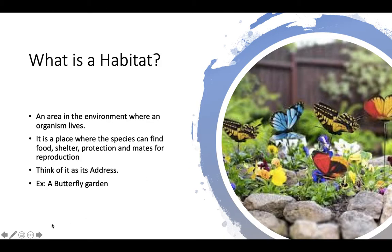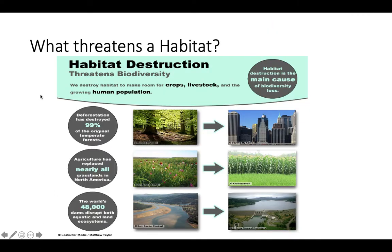Now let's think about what threatens a habitat. If you're thinking of a forest habitat, for example, it's not a surprise that we humans are the main cause of habitat destruction. Habitat destruction is the main cause of biodiversity loss. We destroy habitats to make room for crops, livestock, and the growing human population. Deforestation has destroyed about 99% of the original temperate forests to make room for our cities.